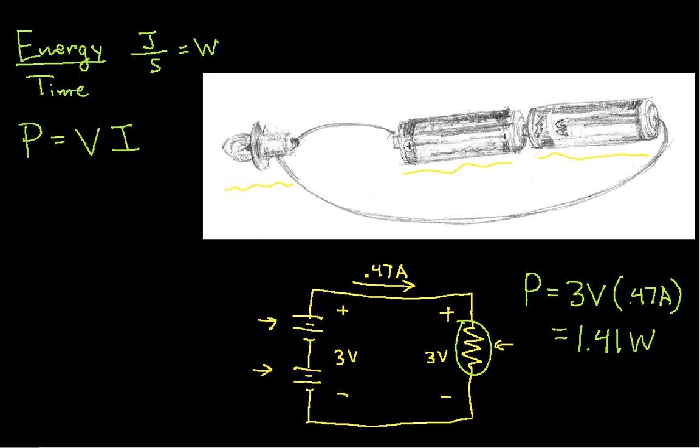So what this says is that this light bulb is dissipating 1.41 watts. Or another way of thinking about it is every second the light bulb dissipates 1.41 joules, primarily as heat.